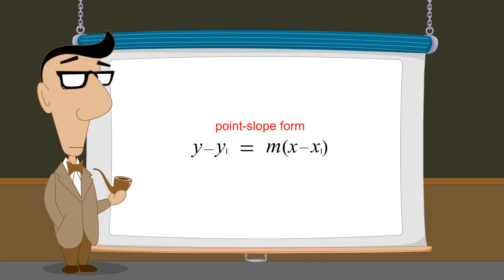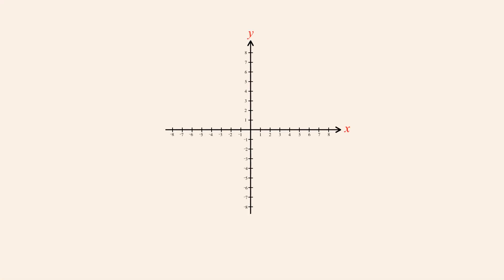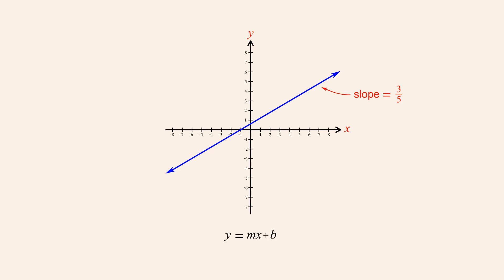Let's try an example using this form to write the equation for a specific line. Let's say that we are given the graph of a line but not its equation. We are told that the line has a slope of three-fifths. Since we know the slope, we might try using the slope-intercept form to write the equation for this graph.